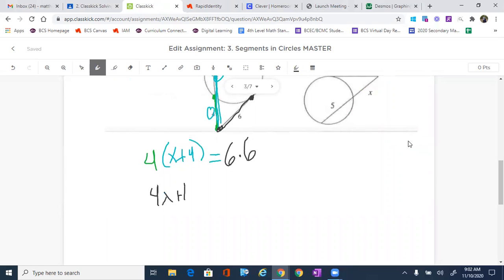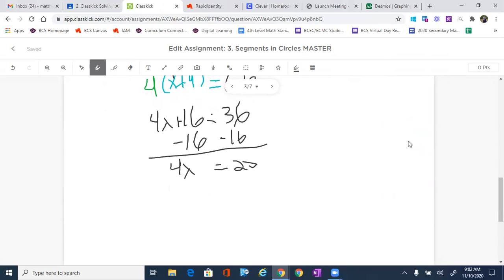So once again, four x plus 16, distribute that four in there equals to 36, you subtract 16. That's going to give us 20 equals to four x. And after we divide by four, x will equal to five.